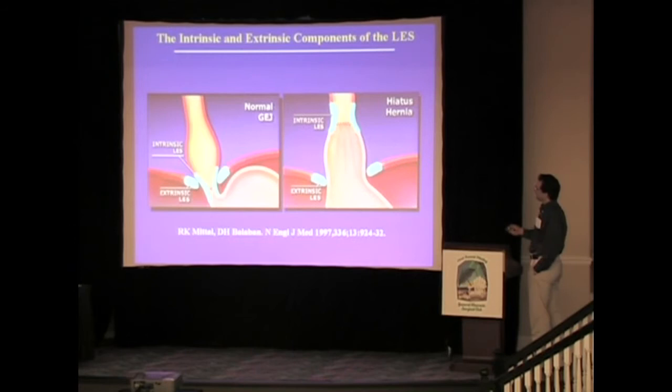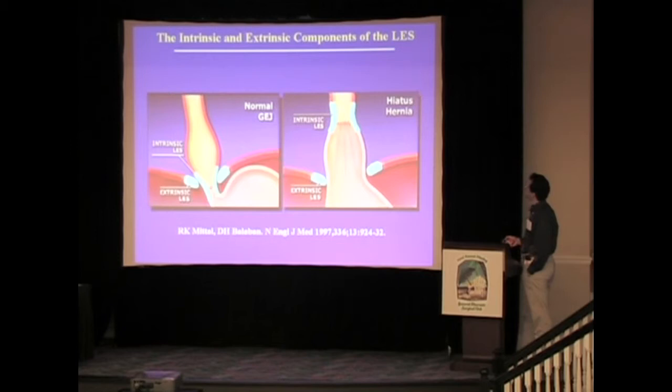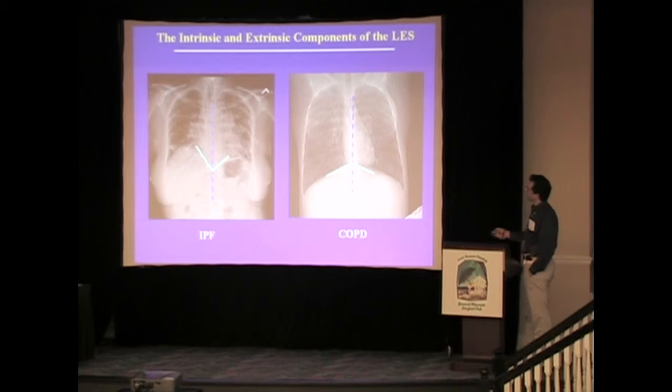Let's also focus on the high-pressure zone in the gastroesophageal junction region, in particular with regards to the two-sphincter action — the intrinsic lower esophageal sphincter and the extrinsic lower esophageal sphincter, as depicted by Dr. Mittal in 1997. This is important because our patient population does have that region under stress, either from severe cupping or flattening of the diaphragm, and the high-pressure zone is definitely under stress in these patients.